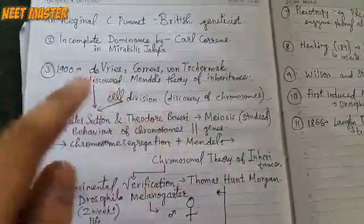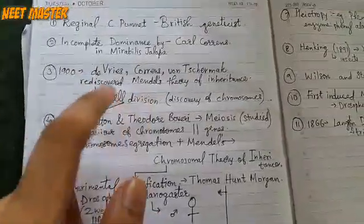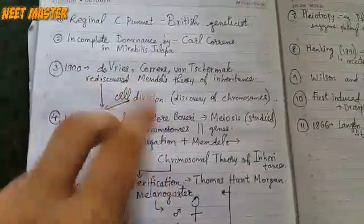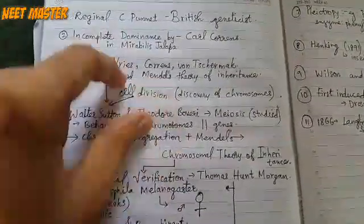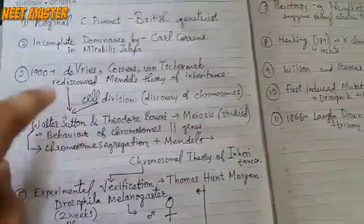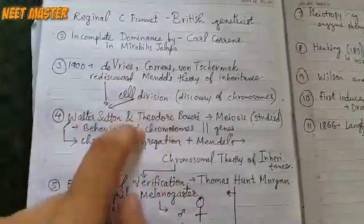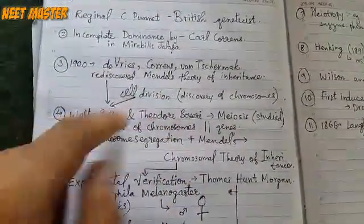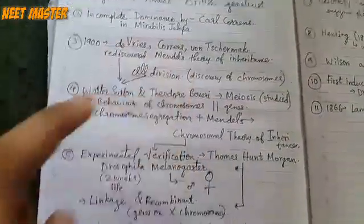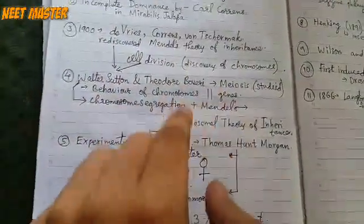Now you have two options. If you have Walter Sutton, you can select Walter Sutton. This is the Chromosome Theory of Inheritance.